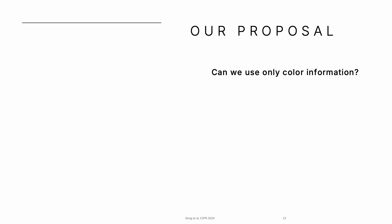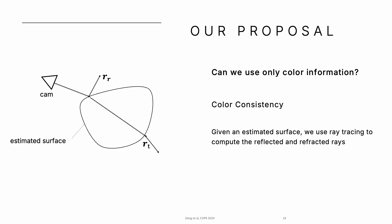This raises a natural question: can we only use color information? Driven by this question, we explore color consistency for surface refinement. Given an estimated surface, we use ray tracing to compute reflected and refracted rays.